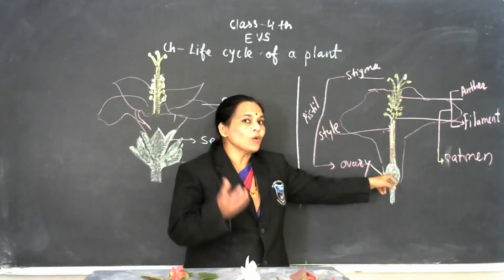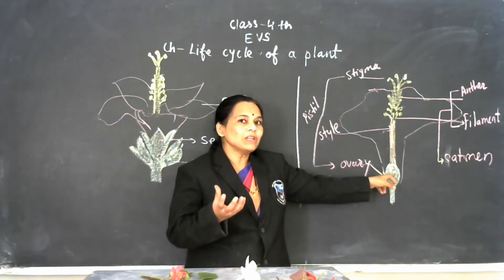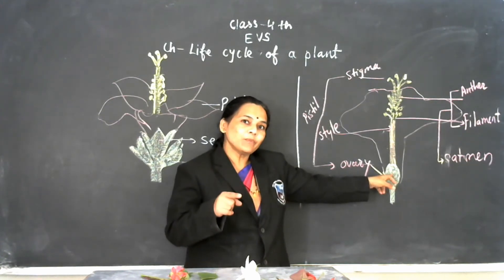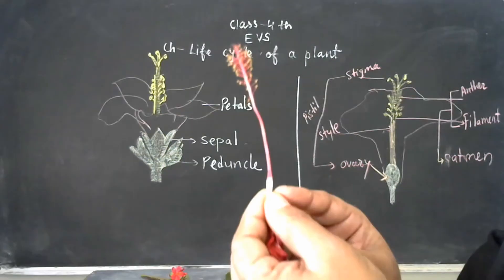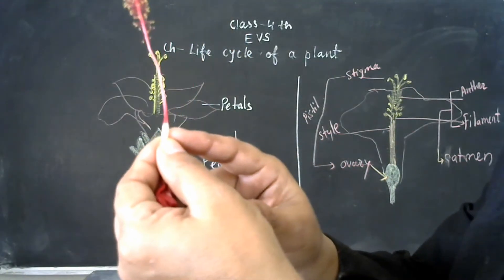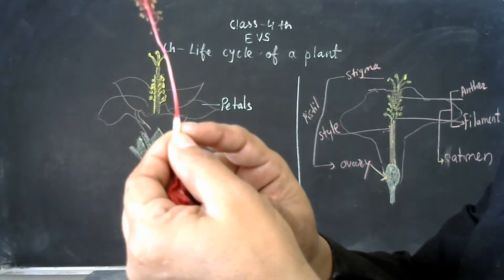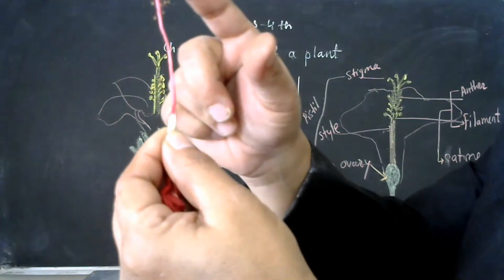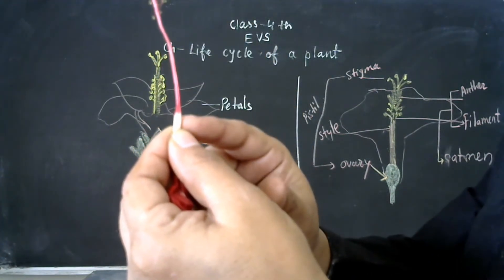Ovaries have ovules there. Ovules are the female reproductive part. Can you see ovary here in the base of this flower style? Yes, anther and ovules.